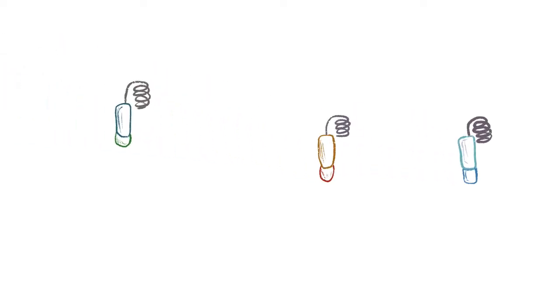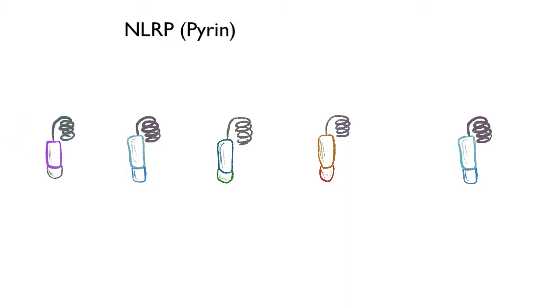These NOD-like receptors can be broken down to two groups: the NLRP, P for pyrin, or NLRC, C for caspase. Within these two groups there are multiple receptors, but we're not going to talk about all of them. We'll be focusing on NLRP3, and mention NLRC4 and NLRP1.